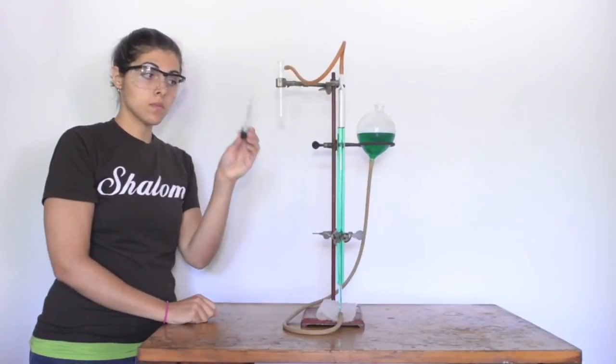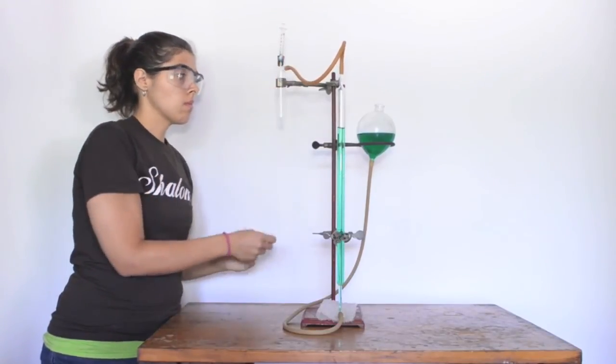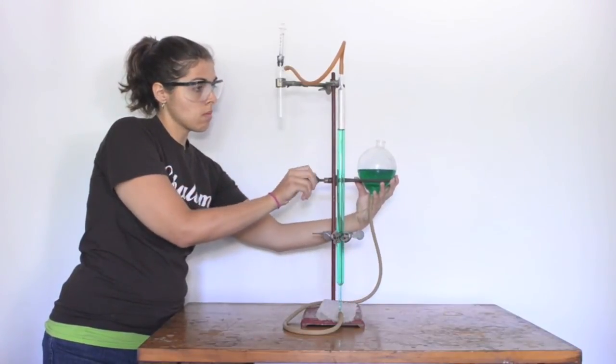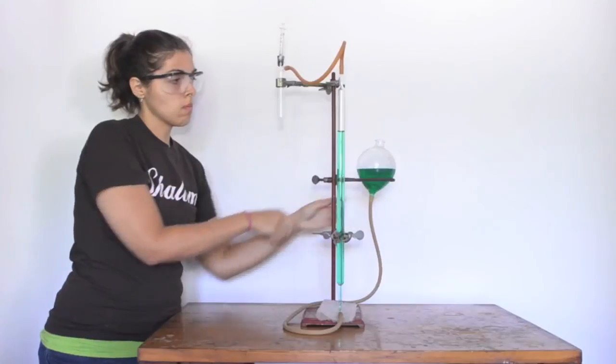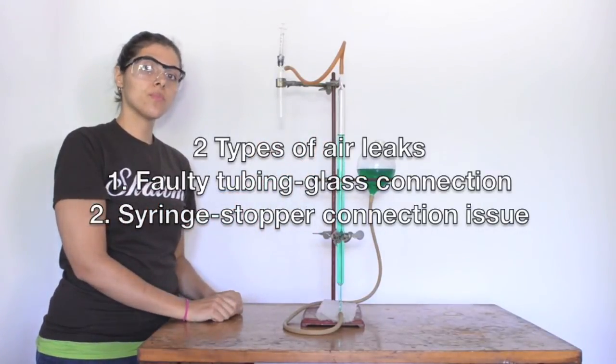Once you've added parafilm, put the stopper and syringe back onto the apparatus. Now raise or lower the bulb again to ensure the system is airtight. Success! If you still find an air leak, repeat the procedures until you find the problem spot.